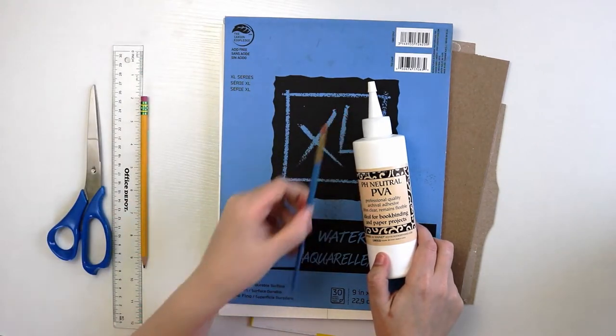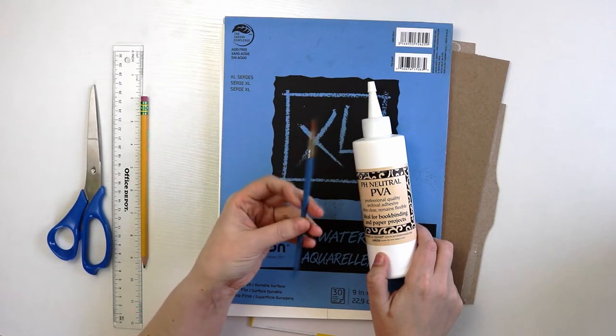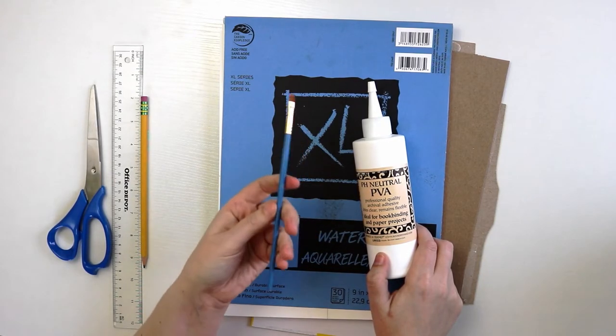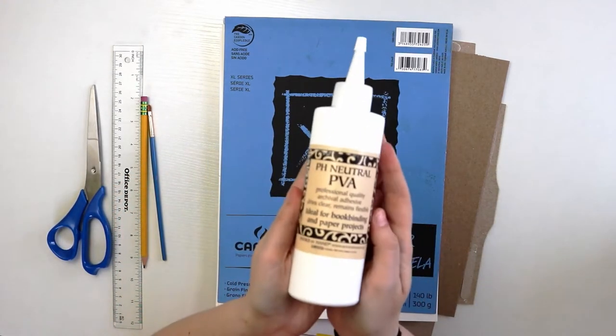You're going to need a junk brush to brush on your glue, something that you don't mind getting glue on. You can go to the dollar store and get some cheap brushes. And then next you're going to need glue.